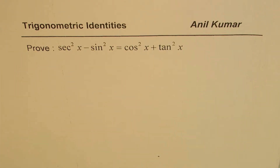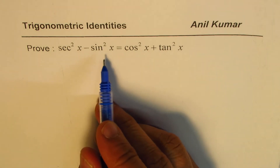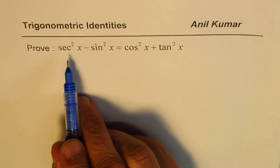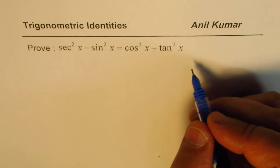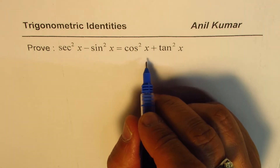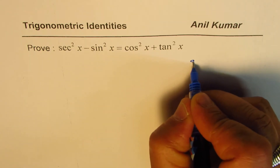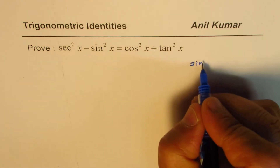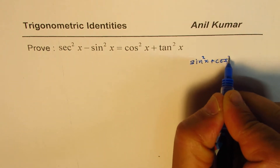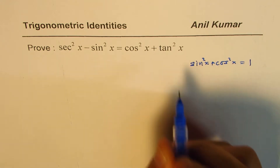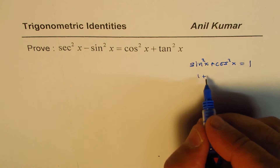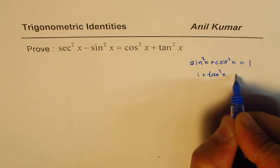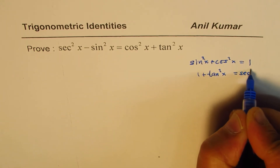I'm Anil Kumar, sharing with you a trigonometric identity in which square of trigonometric ratios are involved. So whenever you see such an identity, it's good to recall our Pythagorean trigonometric identities, which are sine square x plus cos square x equals to 1, and relating to tan, it is 1 plus tan square x equals to secant square x.